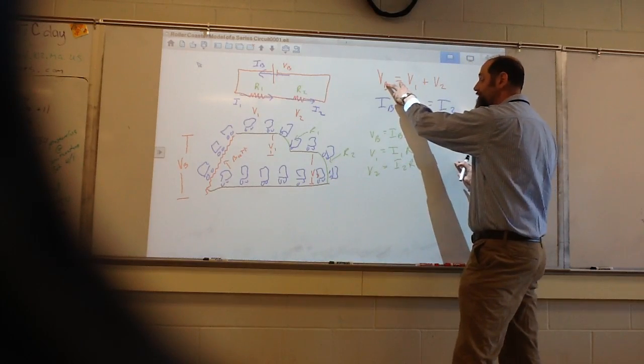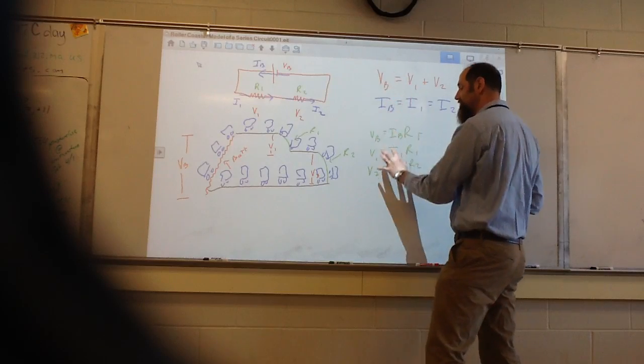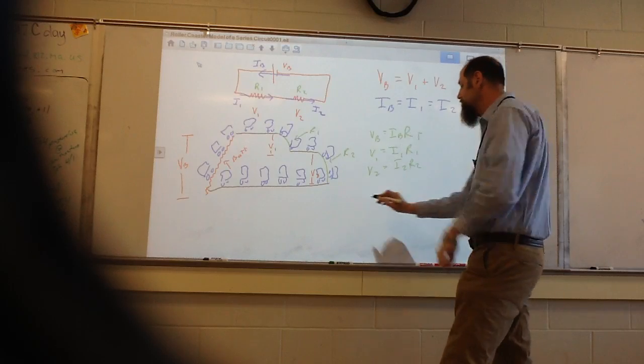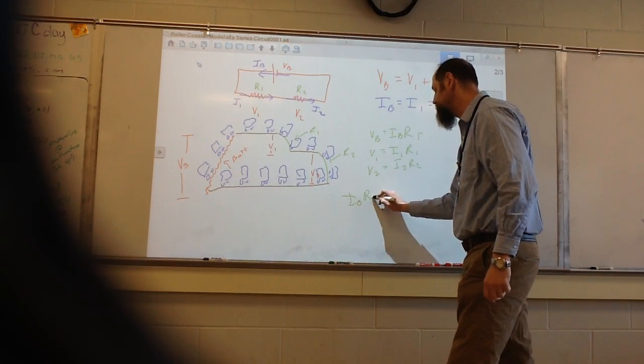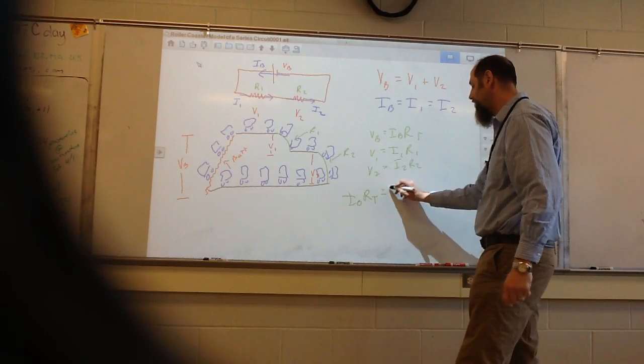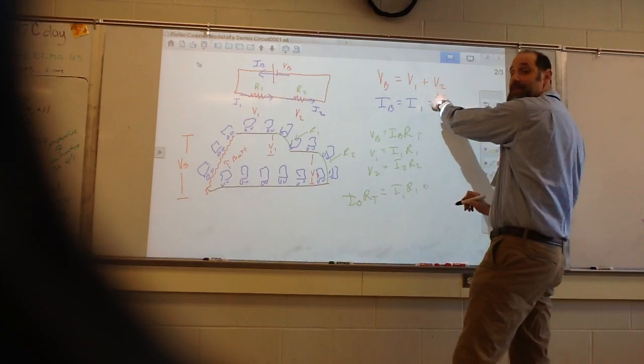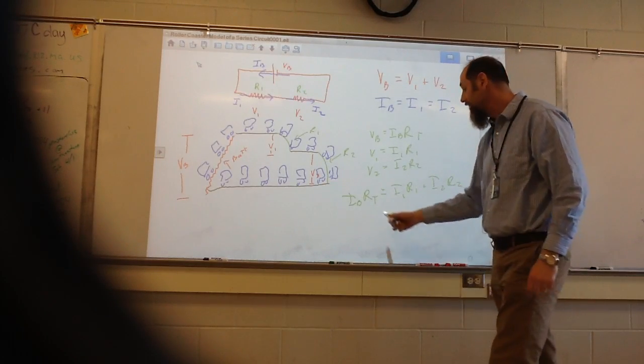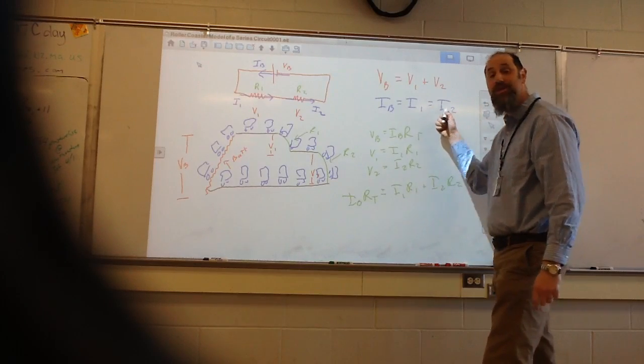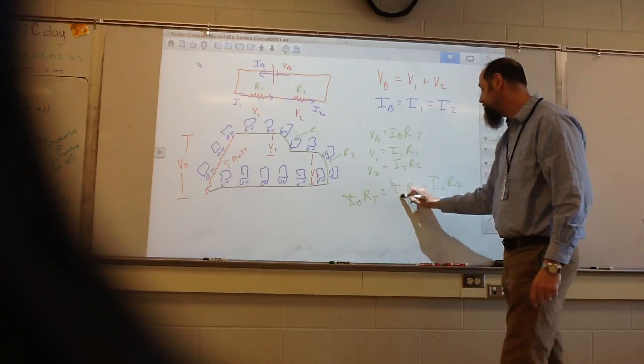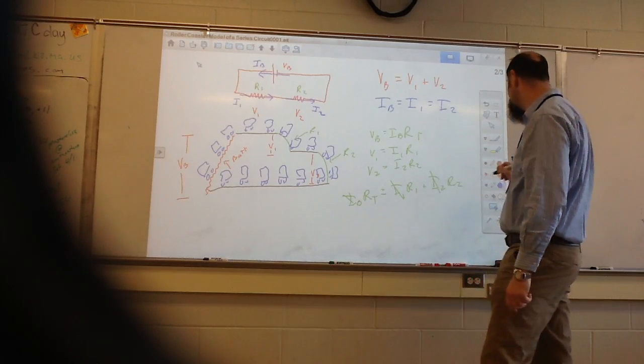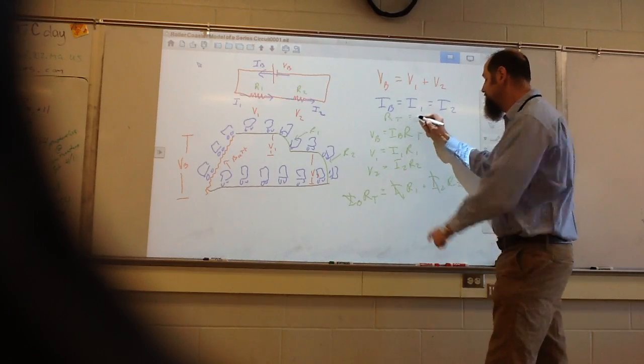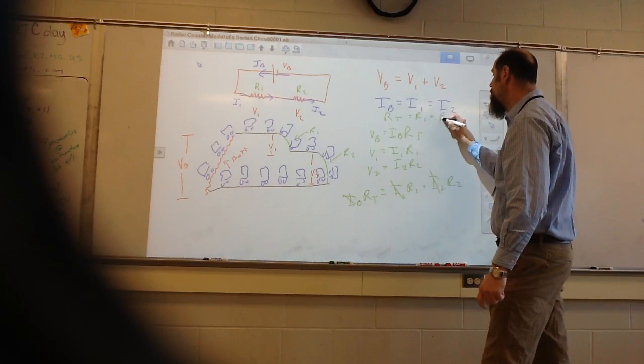So if I take our expression for the voltage and substitute these in, so instead of voltage from battery, I'm going to write current through battery times total resistance. Instead of V1, I'm going to write I1 times R1. And instead of V2, I'm going to do I2 times R2. And I look at all these I's, and remember, we just said they're all the same. So if they're all the same, they mathematically cancel. And so what we're left with is, finally, that the total resistance of the circuit is equal to R1 plus R2.